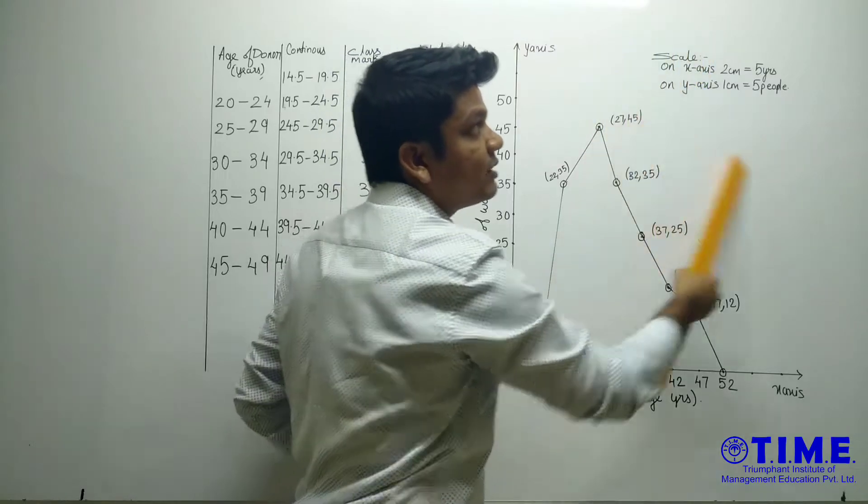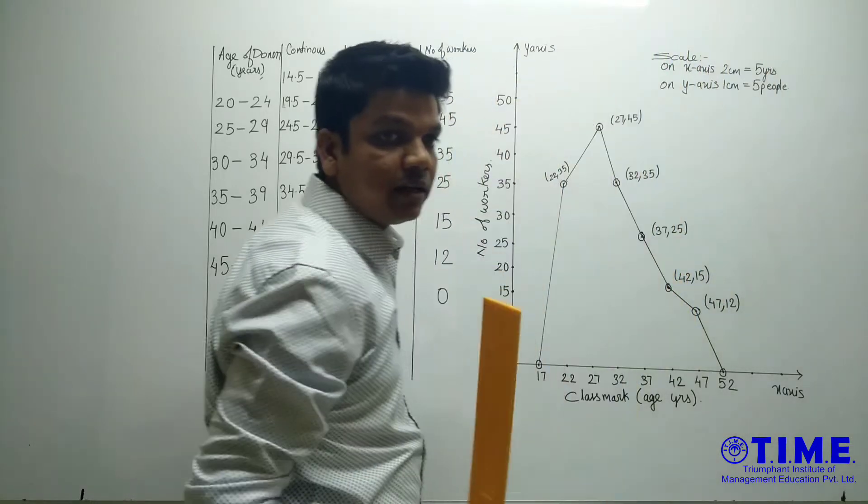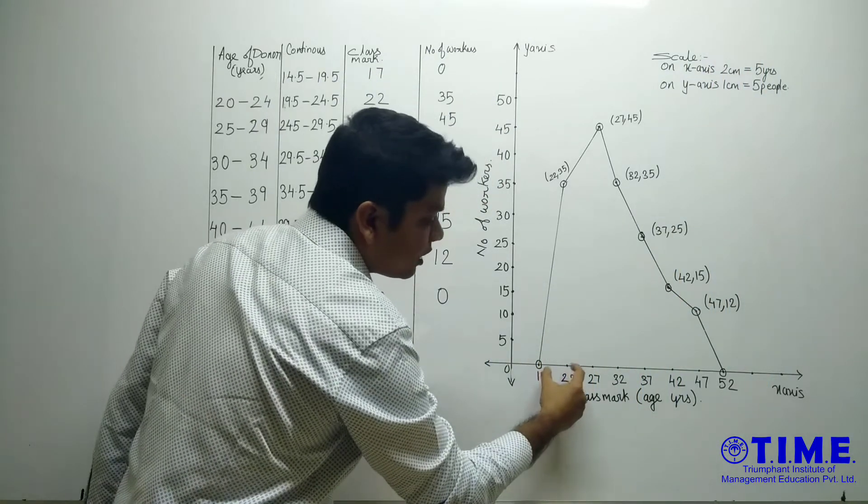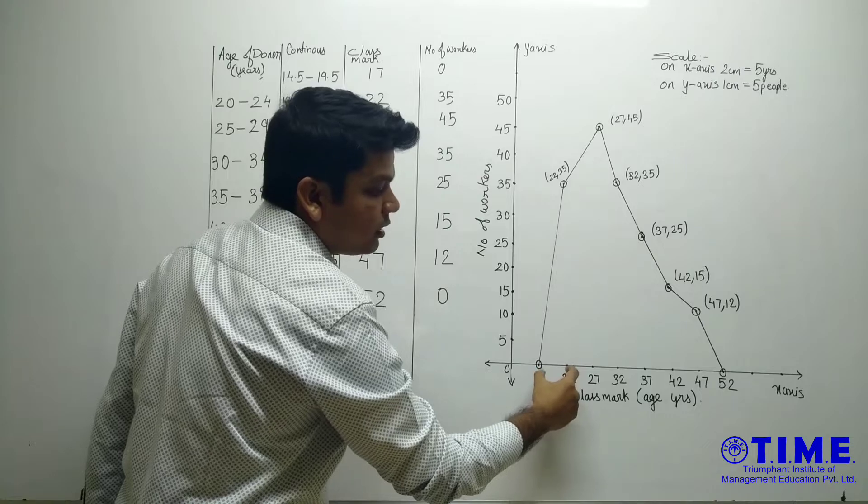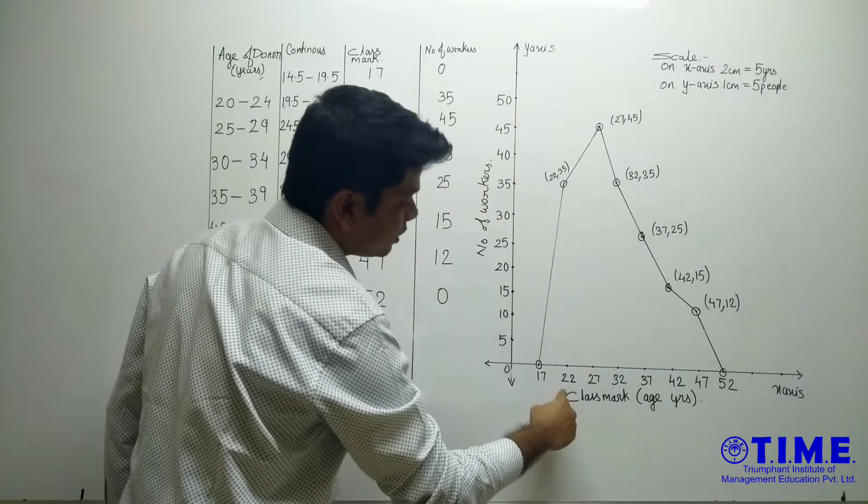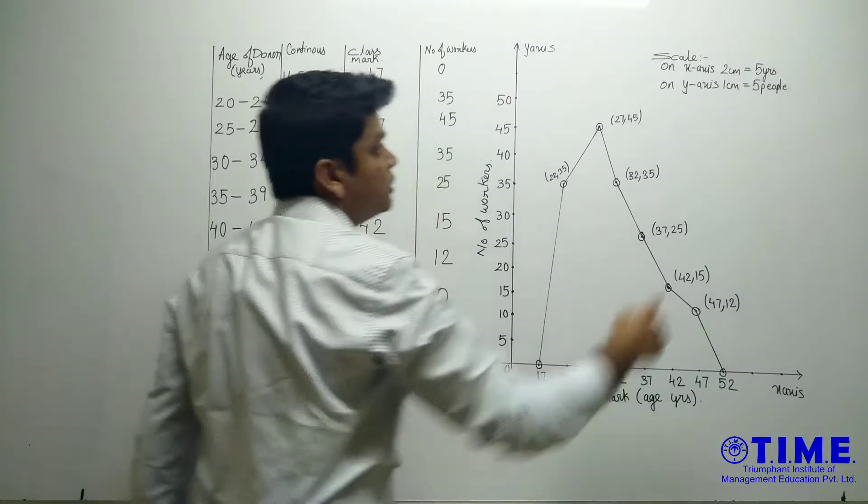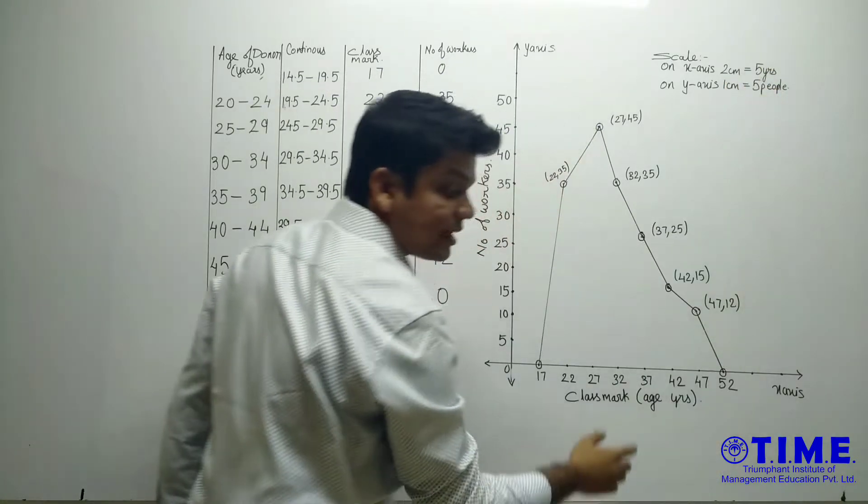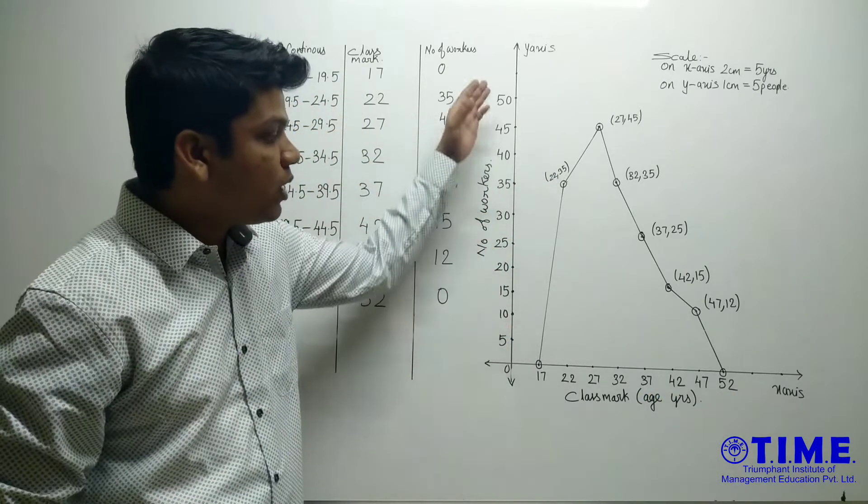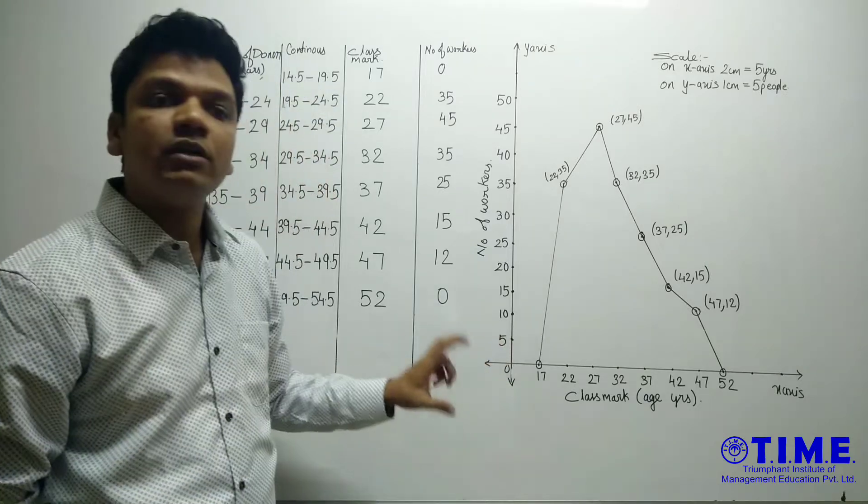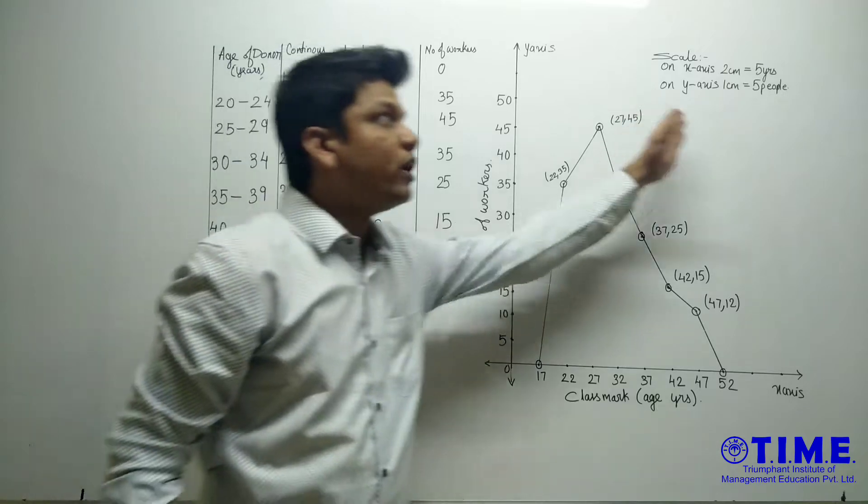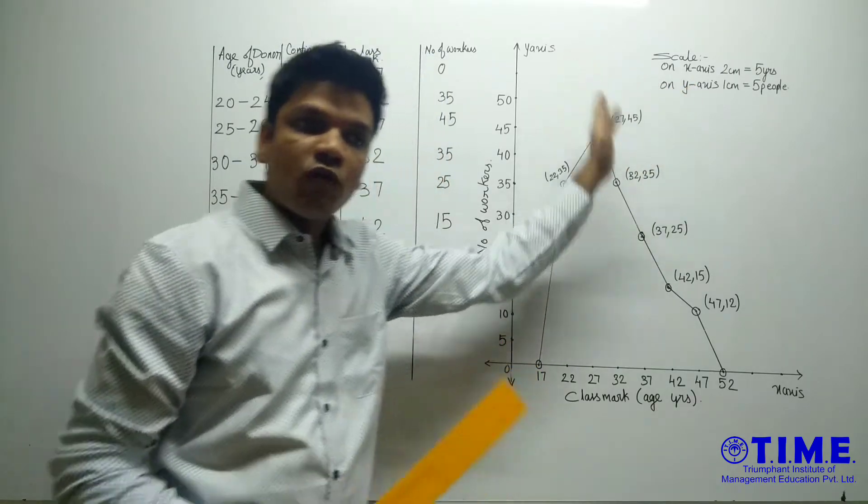Then most important part, that is scale. Writing a scale on x-axis. I have left a gap of 2 centimeters. That's why I am writing here 2 centimeter is nothing but 5 units. So I am writing 2 centimeter as 5 units because these are the years. Then here on y-axis, I have left a gap of 1 centimeter. So 1 centimeter is equal to 5 people.